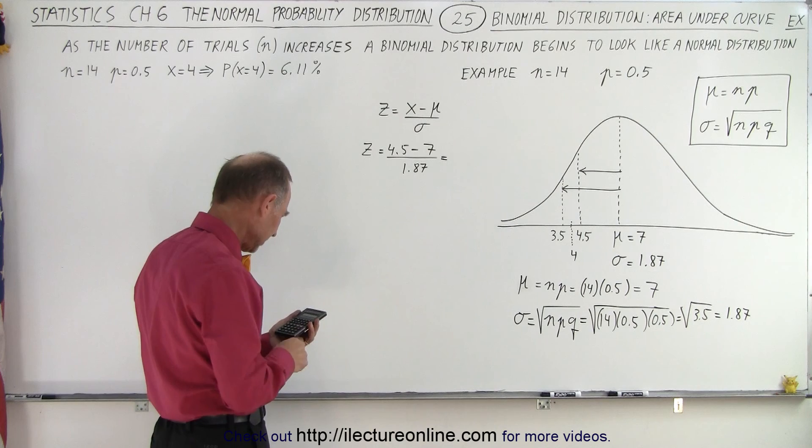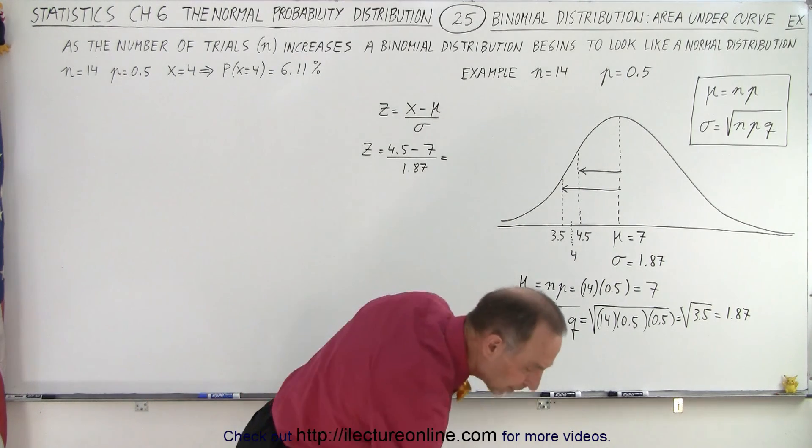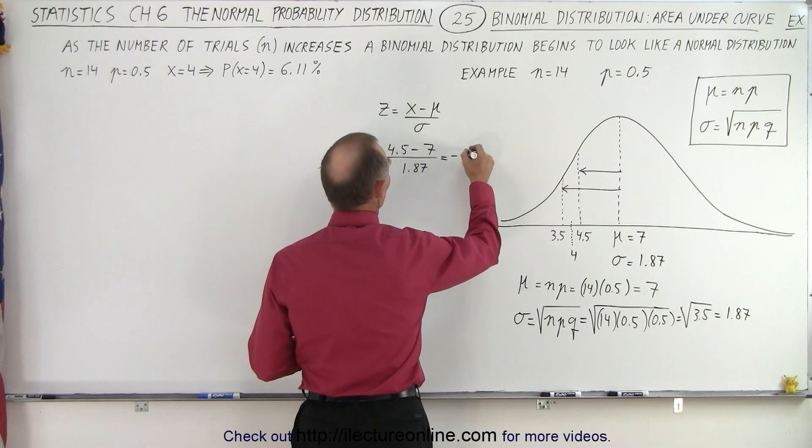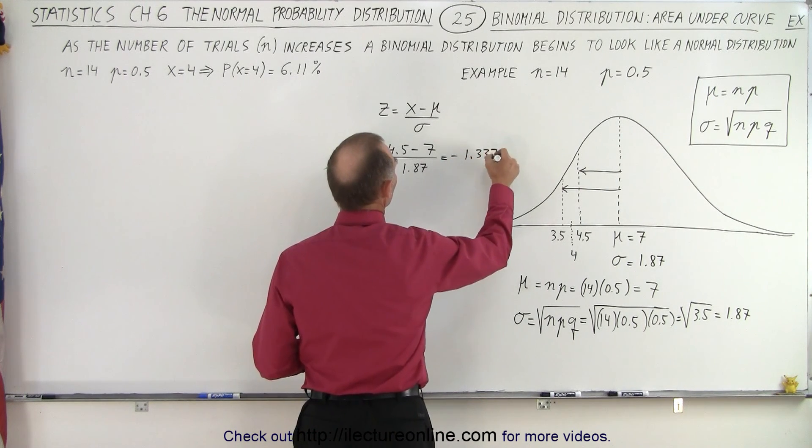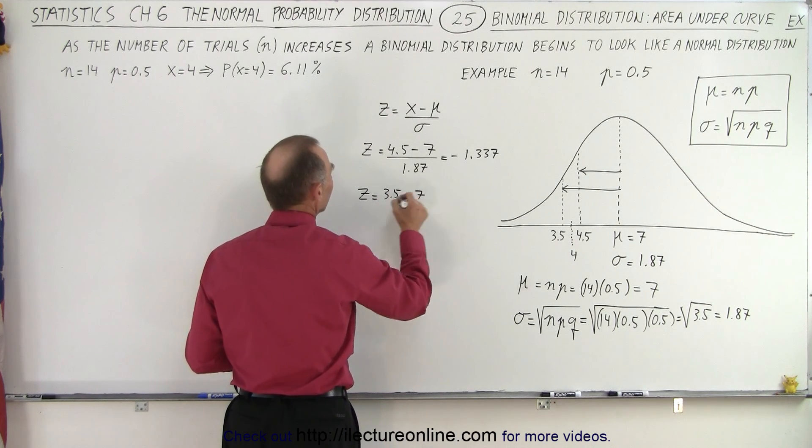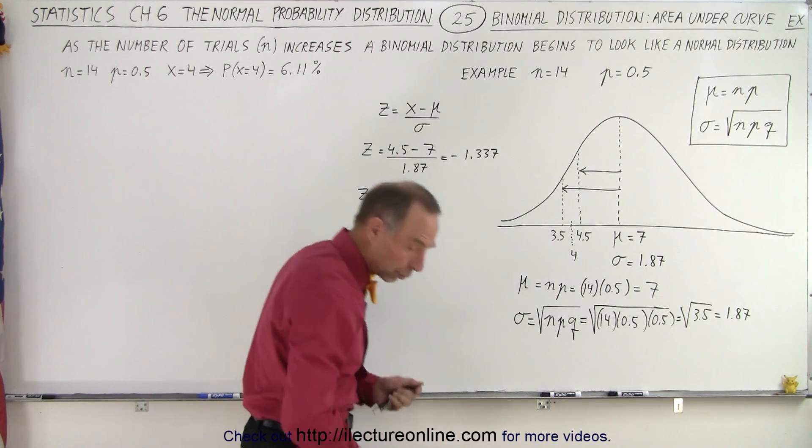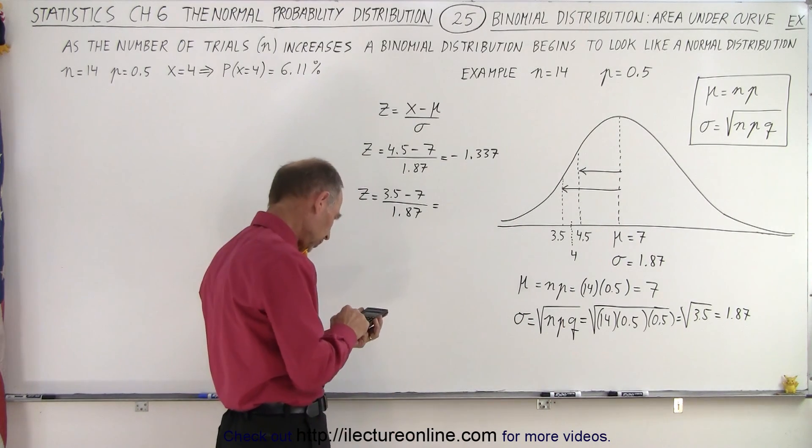We'll do the same for x equals 3.5 minus 7 divided by 1.87, so that is equal to 3.5 divided by 1.87.